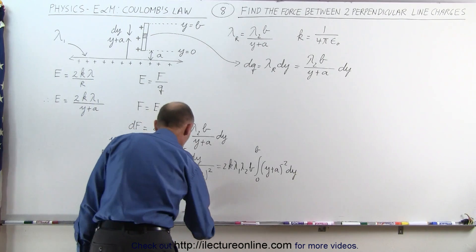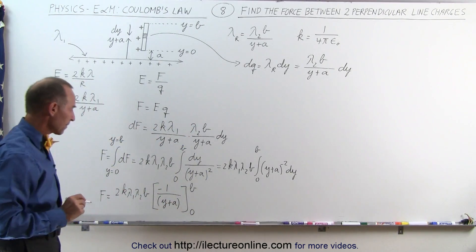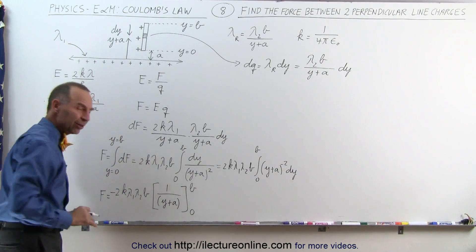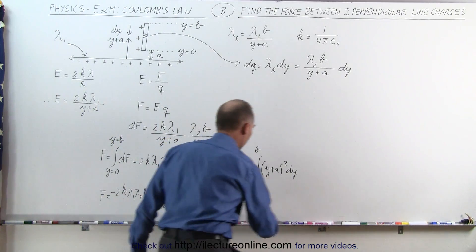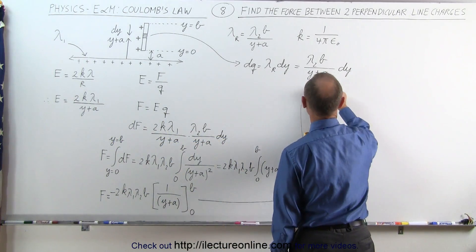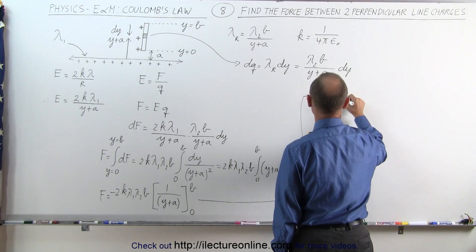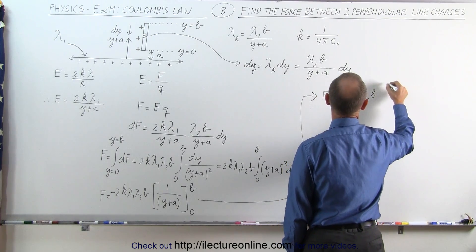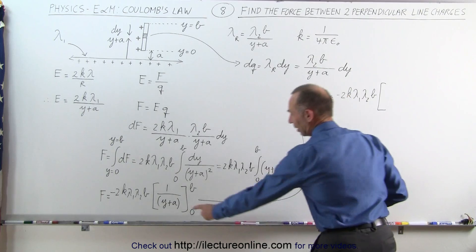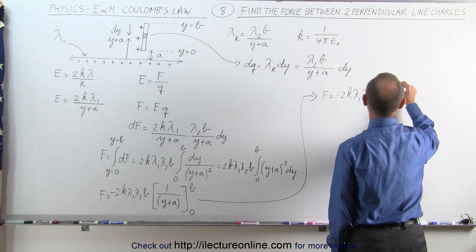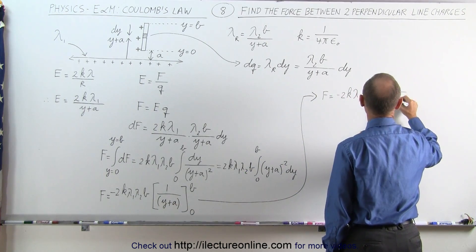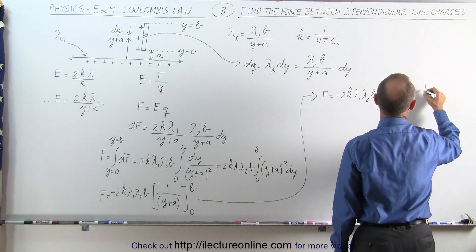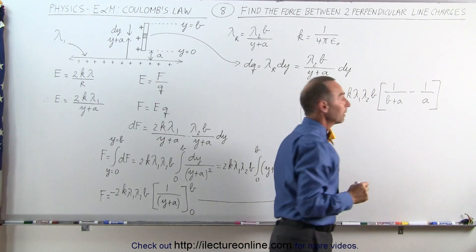Taking the negative sign out front to clean things up, we plug in the limits. The total force equals minus 2k·λ₁·λ₂·b times: plugging in the upper limit gives 1 over (b + a), minus plugging in the lower limit where y equals 0, which gives 1 over a.